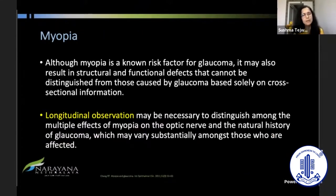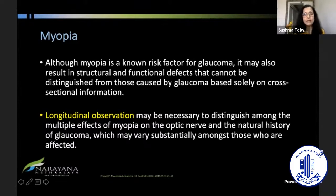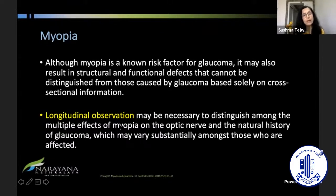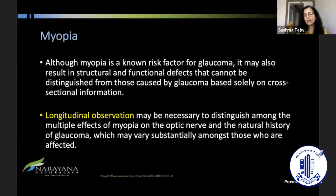Myopia has a slightly different presentation in glaucoma and there is an overlap. Myopia is a risk factor, and there is overlap between the functional and structural defects of glaucoma and myopia. Myopic patients have to be carefully examined and our threshold for suspecting glaucoma should be high so that we can pick up glaucoma early. Longitudinal observation may be required to understand whether myopes progress faster than emmetropic or hyperopic glaucoma patients, particularly when pressures are within the normal range.